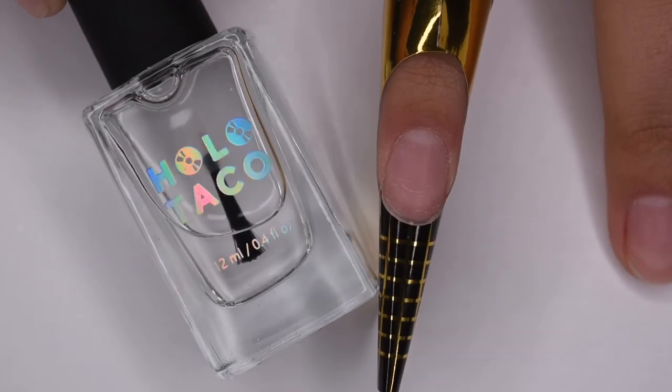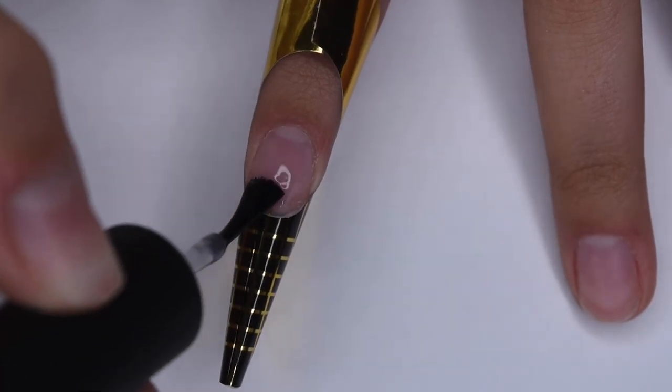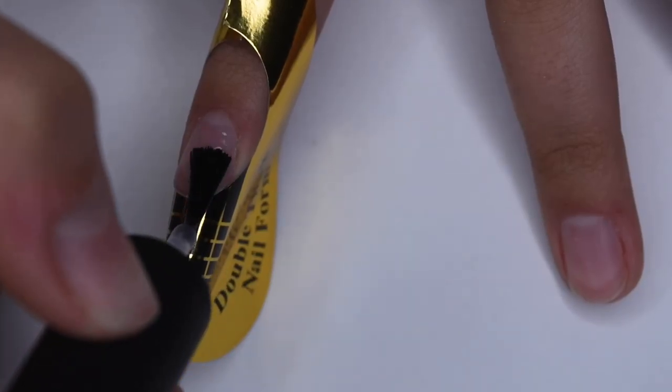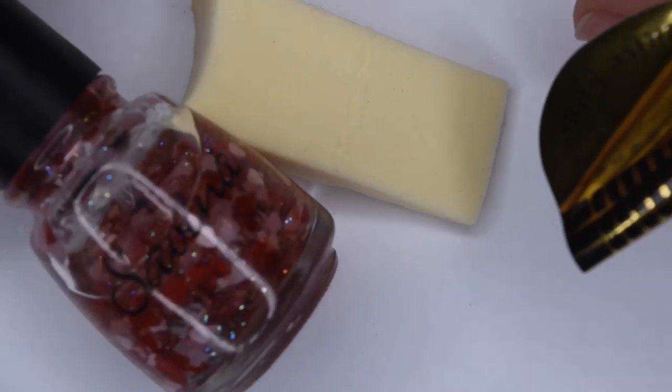And since I don't want to wear this nail for super long, I'm going to apply my Holo Taco Peely Base Coat for easy removal, and obviously, if you wanted to keep this manicure on, you would skip this step and go in with your natural prep and then the polygel.